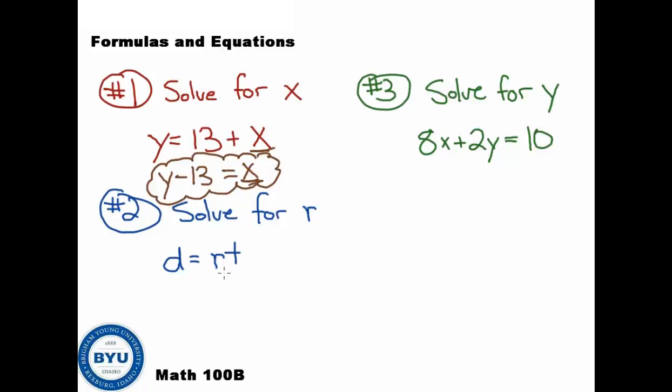On the next one here, we want to get r by itself. So we need to undo this t. So it's being multiplied. The opposite of multiplication by t would be to divide both sides by t. We could divide both sides by t. And we would end up getting r equals d over t. That would be the answer for that one.